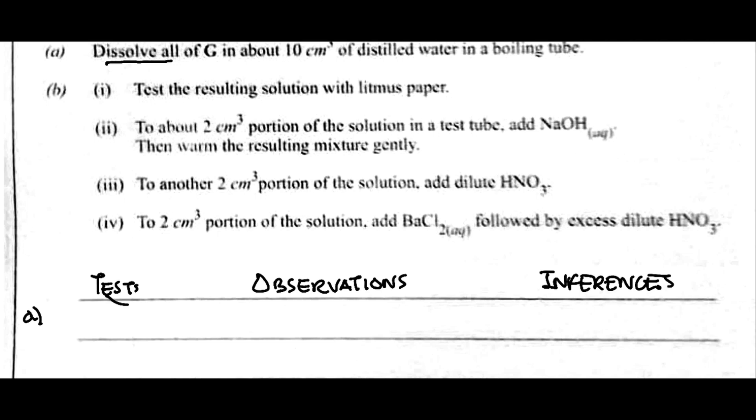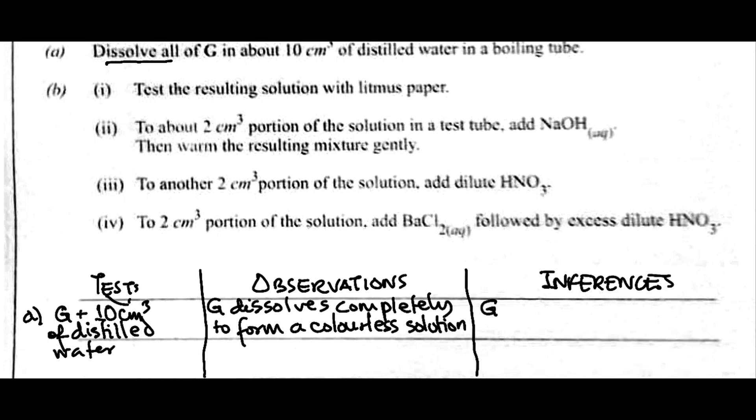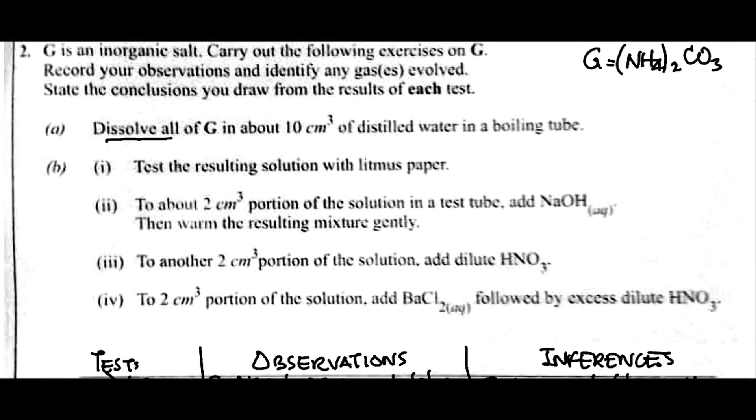So, test 1 here is G plus 10 cm³ of distilled water. So, you divide this. What do we notice here? G dissolves. G dissolves completely. G dissolves completely to form a colorless solution. So, what would be our inference here? That G is a soluble salt. Were we told that G is a salt? Yes, we are told that G is an inorganic salt. So, you are correct. You can use that in our inference that G is a soluble salt.